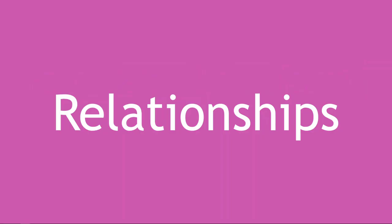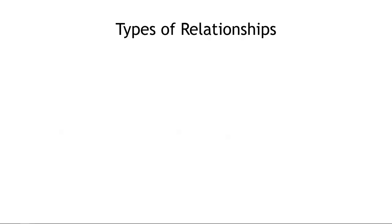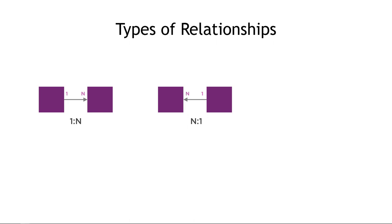Now let's talk about relationships — not those kinds of relationships, relationships between our tables. There are three types of relationships we'll be working with: one to N, N to one, and N to N. The N part is sometimes called many, so one-to-many or many-to-many. I should note there is no one-to-one relationship in Power Apps. So let's go through these one at a time. I'll use the out-of-the-box entities for some examples, and then we'll figure out what we need for our specific scenario.